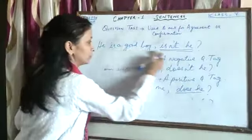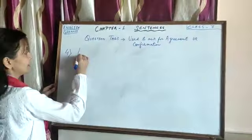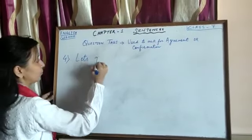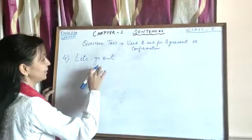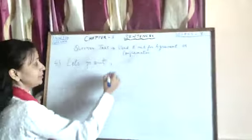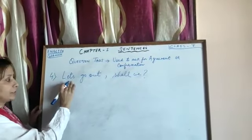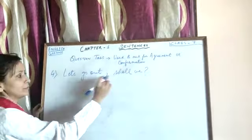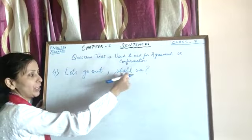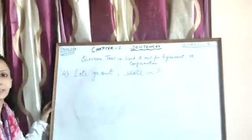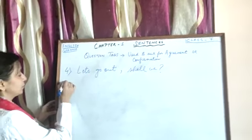Now let us see the fourth rule. Some statements are made this way: 'Let's go out.' The tag will be 'shall we?' 'Let's' means 'let us.' So in this kind of statement, we will always use 'shall.' There won't be any other auxiliary verb — it will be 'shall we,' because 'let's' means more than one person, and something is said among ourselves. So that is the fourth rule.